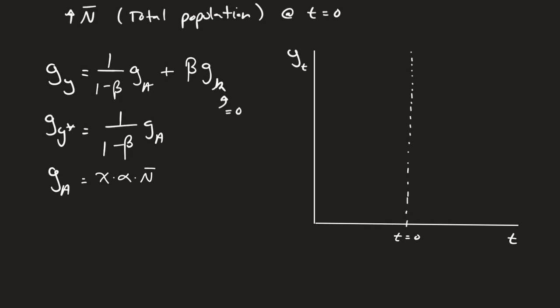We want to see what happens before and after the change. Let's assume that before the change, we are at some steady state. We'll draw a straight line looking like this. Up to that point, we were at 1/(1-β) times some growth rate in A. We were at steady state beforehand.